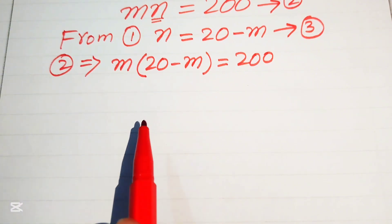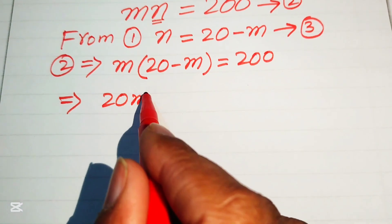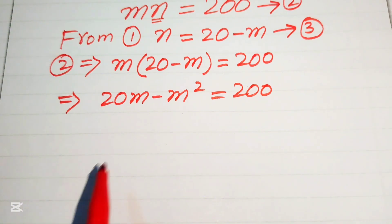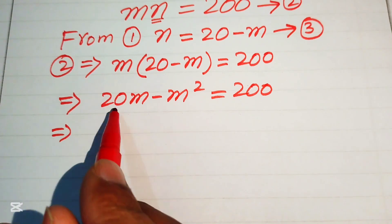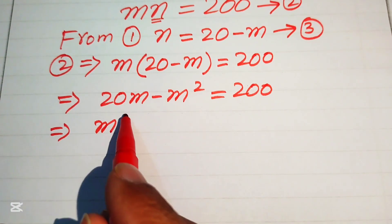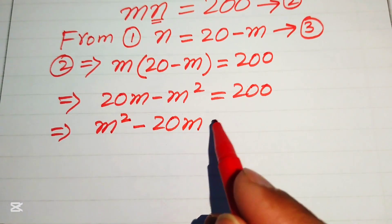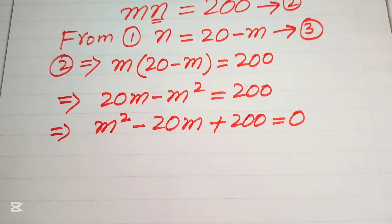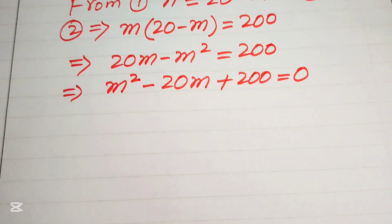We multiply m through both terms to get 20m minus m squared equals 200. Moving all terms to one side gives us m squared minus 20m plus 200 equals zero. This is a quadratic equation in m, so we apply the quadratic formula to solve it.